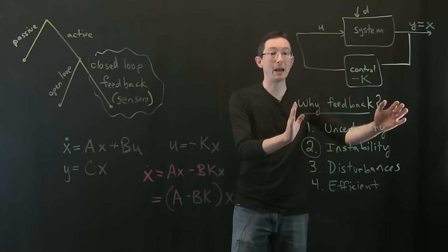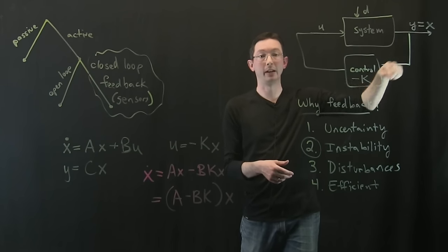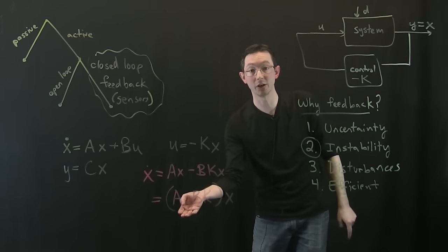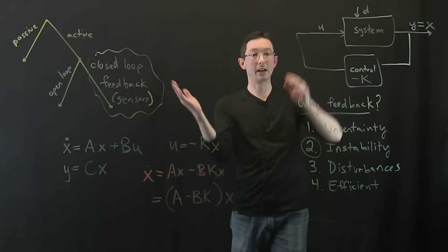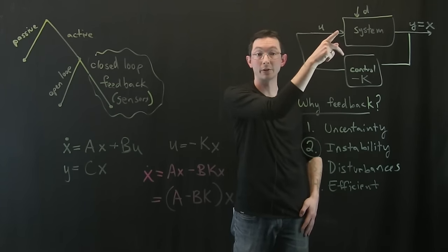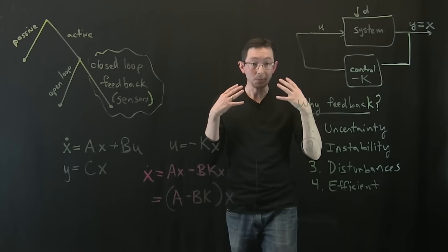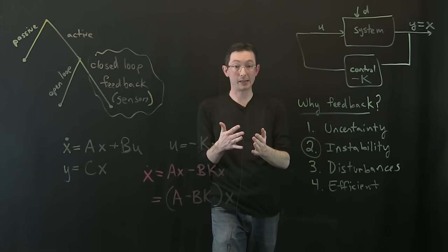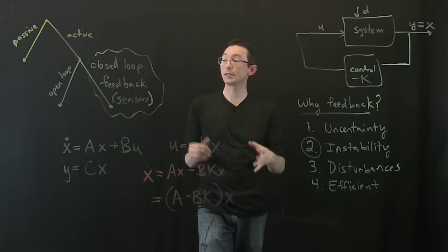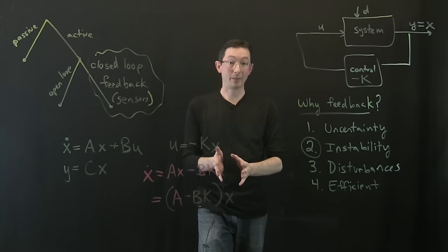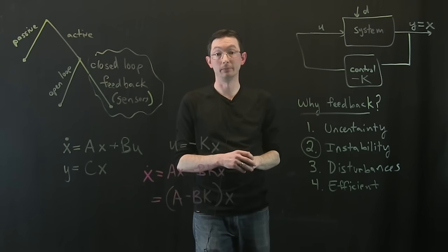Feedback solves all of these fundamental problems: uncertainty is handled by measuring what's actually happening and feeding it back; instability is corrected by changing the closed loop dynamics; external disturbances like gusts of wind that would throw off a pre-planned trajectory can be accounted for; and feedback control is efficient — the more effective you are, the less energy you put in. I'm really hoping to get you up to speed quickly with MATLAB examples so you can design controllers to actually manipulate your system to do what you want.